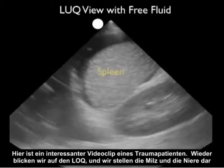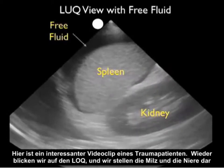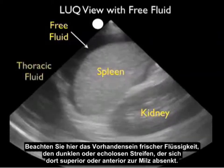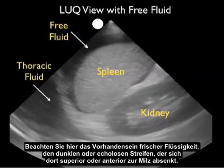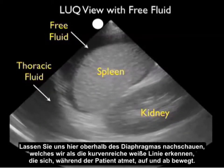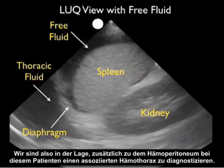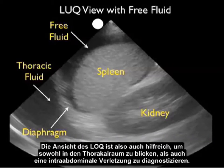Here's an interesting video clip from a trauma patient. Again, we're looking at the left upper quadrant and we delineate the spleen and kidney. Notice the presence of fresh fluid — the dark or anechoic stripe — layering out superior and anterior to the spleen. But let's look above the diaphragm, which we see as the curving white line moving up and down as the patient breathes. We notice the presence of a dark fluid collection within the thoracic compartment, allowing us to diagnose an associated hemothorax in addition to the hemoperitoneum. So the left upper quadrant view is also helpful for looking into the thoracic compartment.